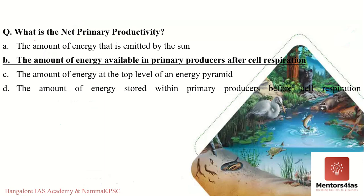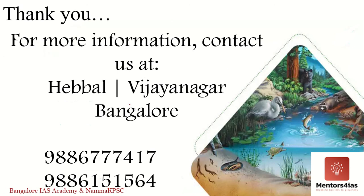For revision: what is net primary productivity? The answer is the amount of energy available in primary producers after cell respiration — not before, but after cell respiration. In the next video, we will continue with ecological pyramids. If you have any doubts, please write to us in the comment section. Thank you and have a great day.